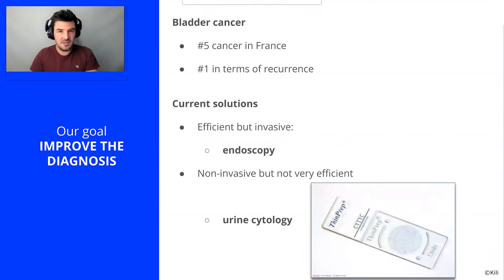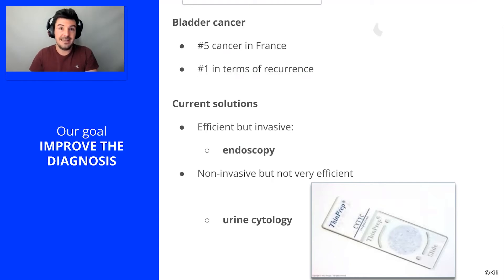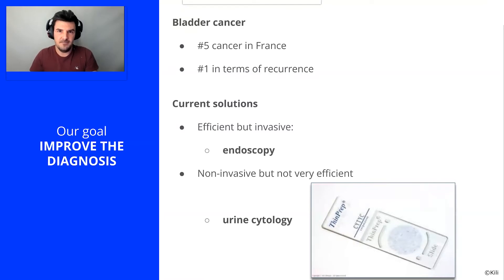The moderately effective solution is cytology, but it has a great advantage of being very easy to implement. It consists in taking a simple urine sample and observing it under the microscope. With VisioSeed, our goal is to improve urine cytology. So let's take a closer look at this cytology slide.